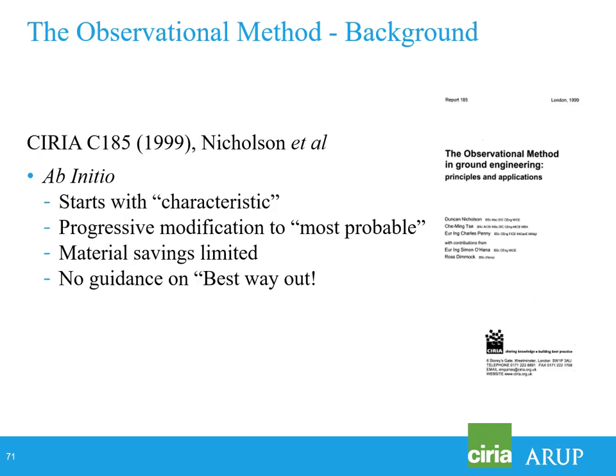CIRIA report C185 from 1999 by Nicholson et al. also used the term ab initio but changed its definition somewhat. Instead of starting with most probable parameters, this document started with characteristic — so you start with a characteristic design compliant with design by calculation. Then through progressive modification and observations, if behaviour was tending towards most probable, you could start changing your construction sequence to make savings in programme or materials. Peck started from most probable; the CIRIA report started from characteristic. And there was no guidance on the 'best way out.'